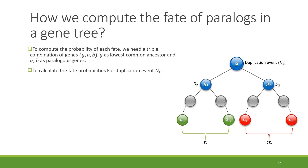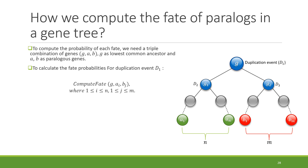To compute the fate of paralogs in a gene tree, we need a triple combination of g, A, and B — where A and B are paralogous genes and g is their lowest common ancestor. For example, we consider the root of the tree as a duplication event, then consider all left descendants as A and all right descendants as B. We compute the fate probability for any combination of g, A_i, and B_j, and by averaging over all combinations we find the probability for each fate.